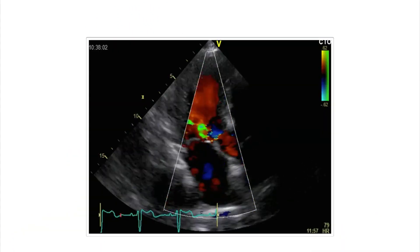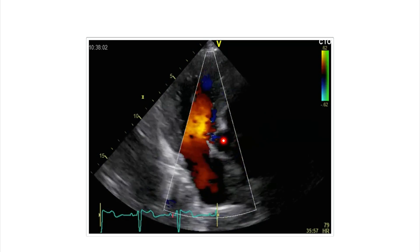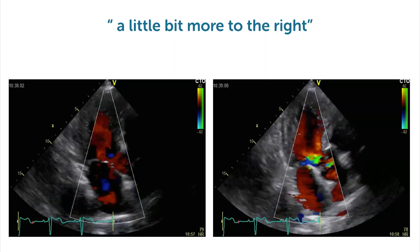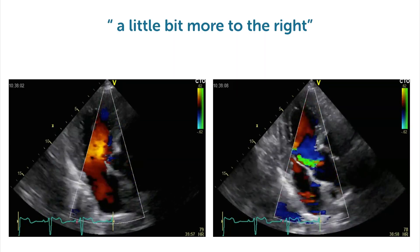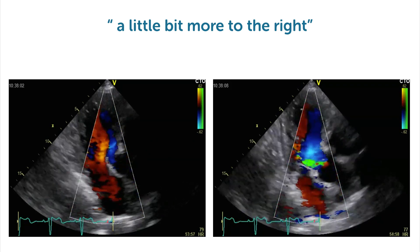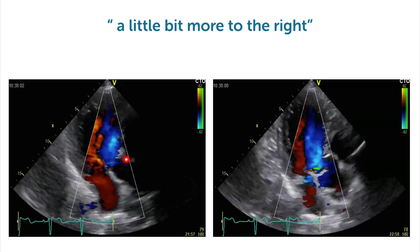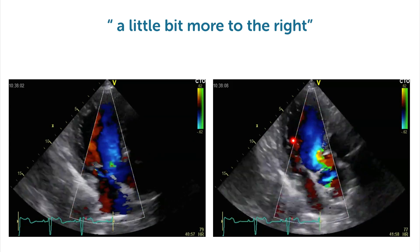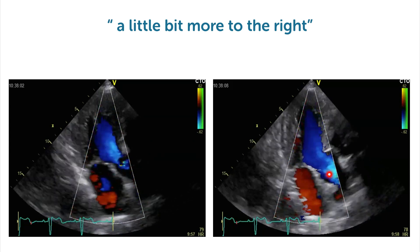Does this patient have aortic regurgitation? Well, maybe a little bit. See what happens if we move the transducer just slightly to the right — all of a sudden this turns into this, and here you can clearly see the aortic regurgitation. So at this point it's very important that you learn how to image and that you practice as much as possible.